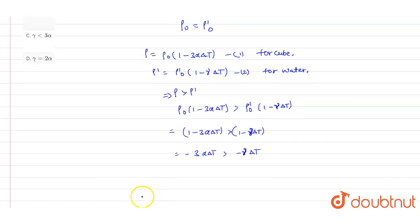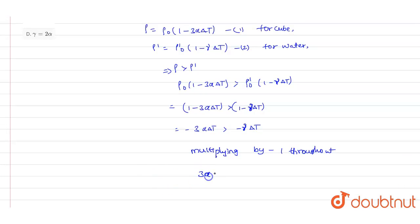Multiplying by minus 1 throughout, what we will be getting is 3αΔt less than γΔt. So this is the equation that we get after multiplying with minus 1. That means 3α is less than γ.